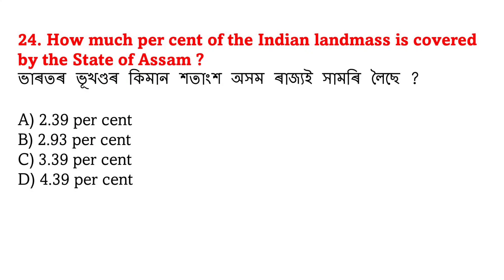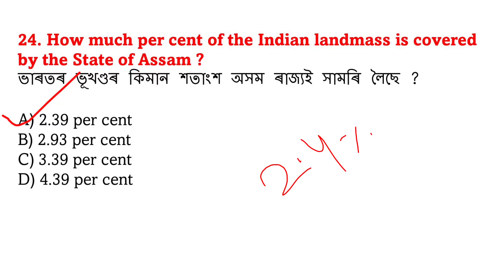Next question: How much percent of the Indian land mass is covered by the state of Assam? Pharatar bhukhandar kimaan hatang ha ahamraiz joi haamori loishe. The answer is E - 2.39 percent. Generally 2.4 percent is also accepted as an answer option.